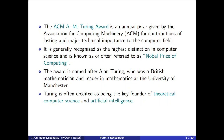The Turing Award is an annual prize given by the ACM for contributions of lasting and major technical importance to the computer field. It is referred to as the Nobel Prize of Computing. The award is named after Alan Turing, who was a British mathematician. Turing is often credited as being the key founder of theoretical computer science and artificial intelligence.